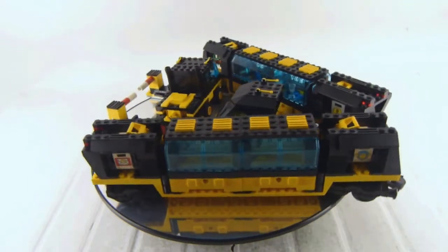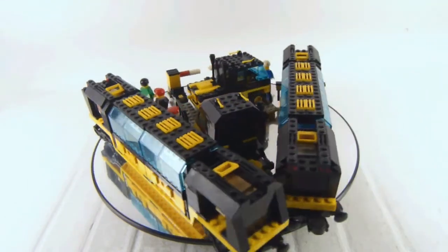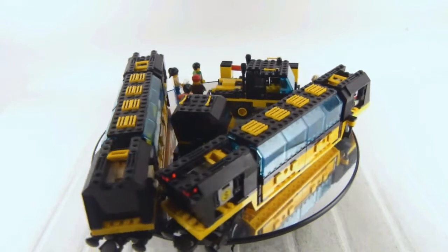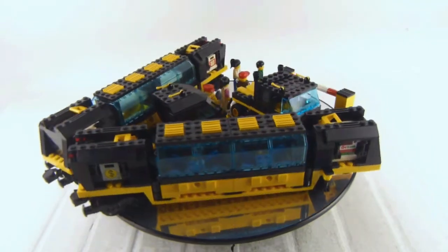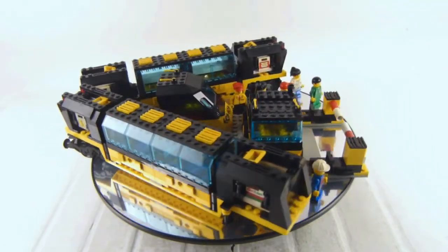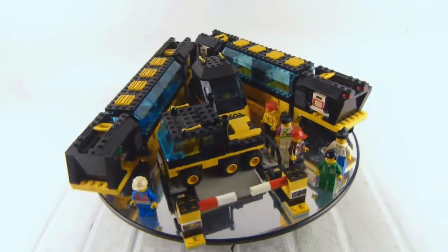In this video I'm reviewing a vintage Lego train set, this is the number 4559, the Cargo Railway. This awesome train came out in 1996 with 7 minifigures and 842 pieces.